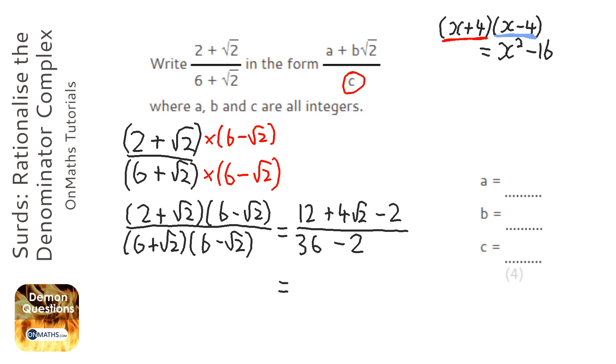12 take away 2 at the top is just going to be 10 plus 4 root 2. Can't do anything more with that. 36 take away 2 is 34. So that could be the answer, but actually we can cancel it down a little bit further.